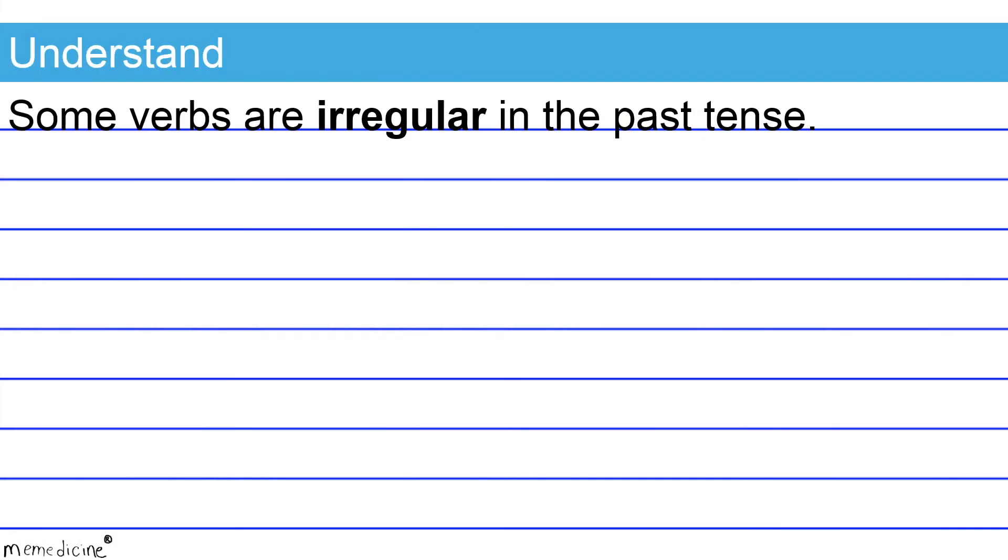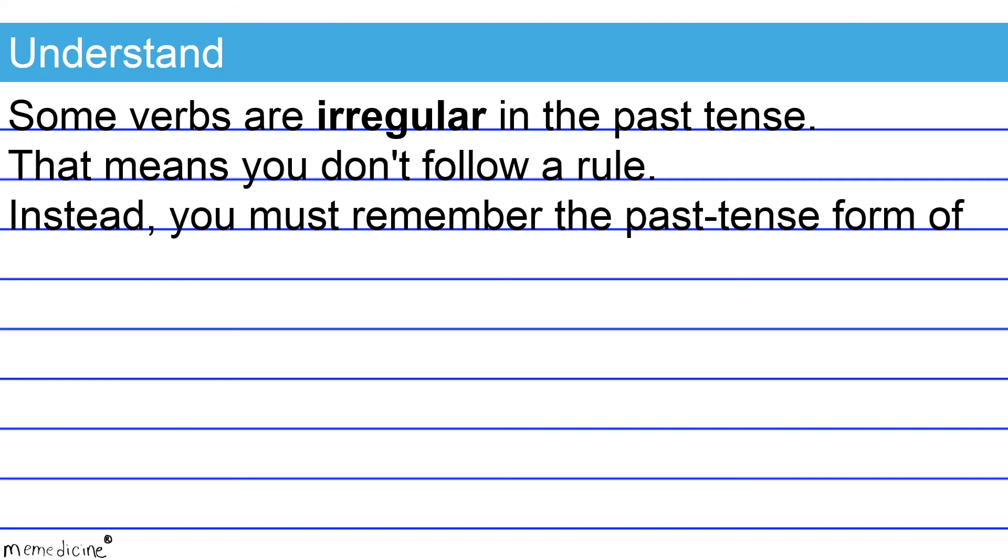Some verbs are irregular in the past tense. That means you don't follow a rule. Instead, you must remember the past tense form of the verb.